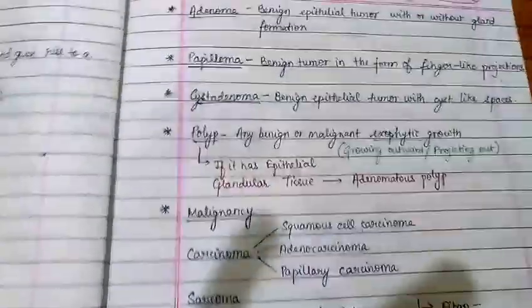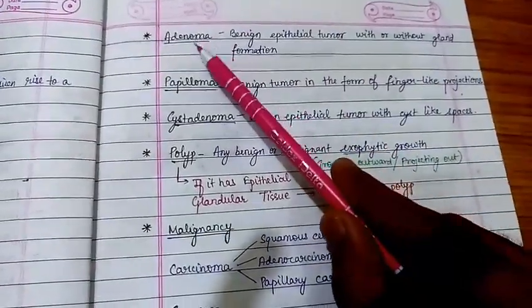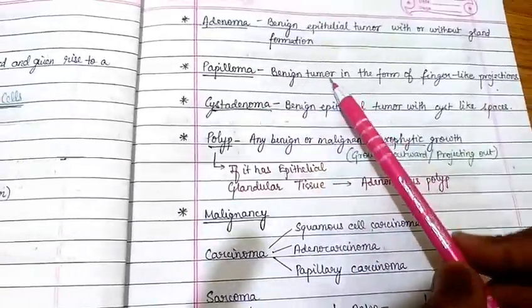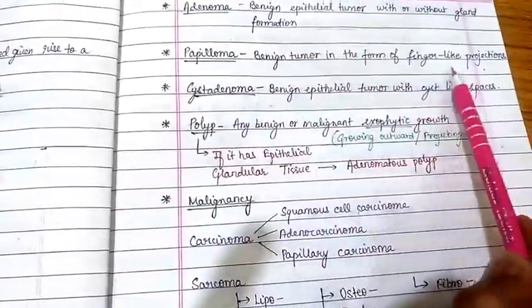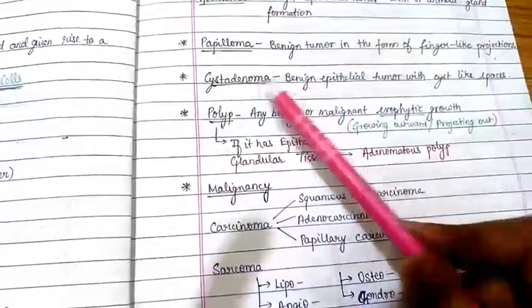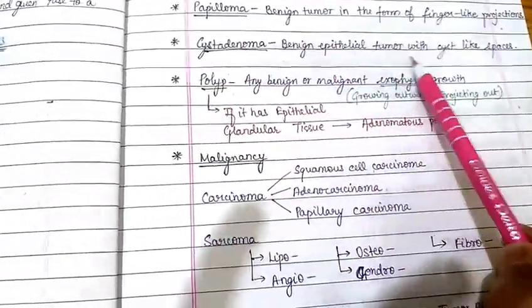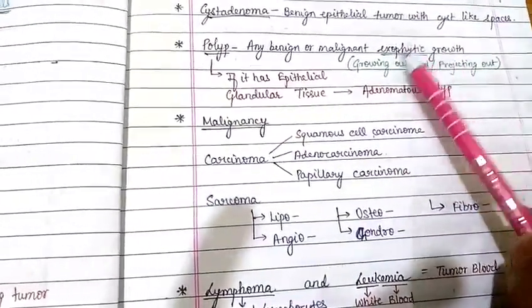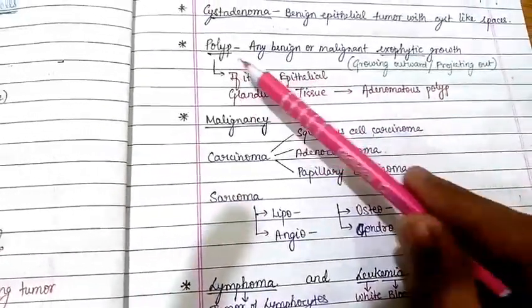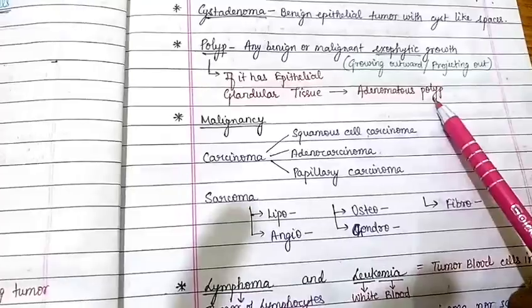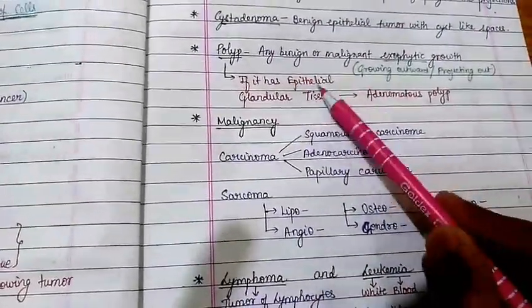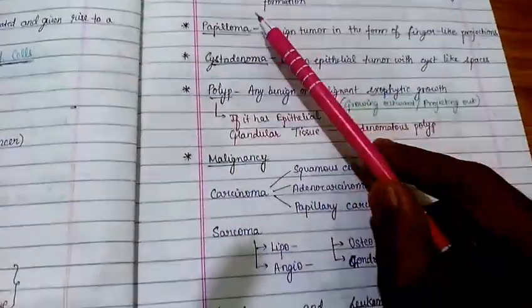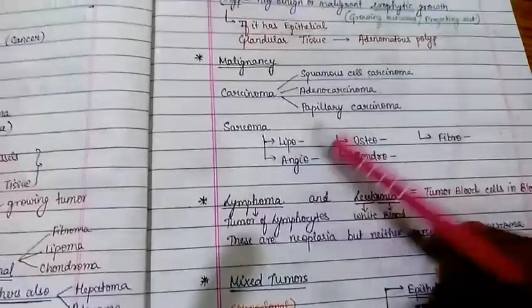Adenoma is a benign epithelial tumor with or without gland formation. Papilloma is a benign epithelial tumor in the form of finger-like projections. Cyst adenoma is a benign epithelial tumor with cyst-like spaces. A polyp is any benign or malignant tumor with exophytic growth — growing outward. If a polyp has epithelial glandular tissue, it is known as an adenomatous polyp.